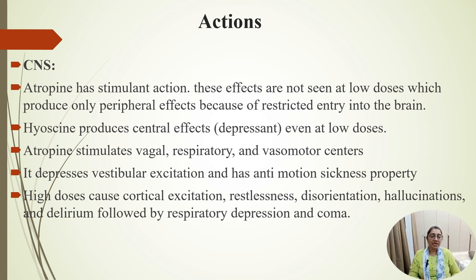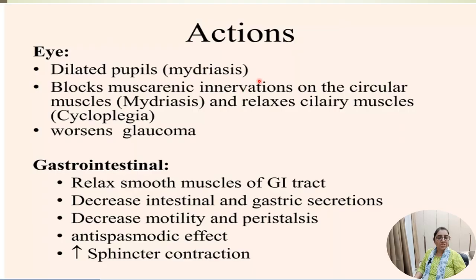Atropine stimulates the vagal, respiratory, and vasomotor centers and depresses vestibular excitement, giving it anti-motion sickness properties. At high doses, it causes cortical excitement, restlessness, disorientation, hallucination, and delirium, followed by respiratory depression and coma.